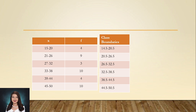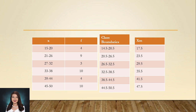Now we will compute the class mark using the formula x_m = (LL + UL) / 2. For the first group 15 to 20: 15 plus 20 equals 25, divided by 2 gives 17.5 — that is our class mark. Next, 21 plus 26 divided by 2 gives 23.5. Then 27 plus 32 divided by 2 gives 29.5. Next, 33 plus 38 divided by 2 gives 35.5. Then 39 plus 44 divided by 2 gives 41.5. And 45 plus 50 divided by 2 gives 47.5. Those are our class marks.